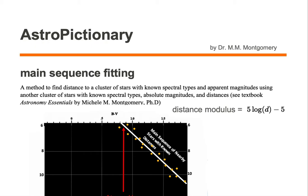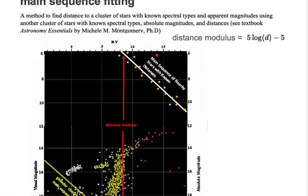Main sequence fitting is a method to find distance to a cluster of stars with known spectral types and apparent magnitudes using another cluster of stars with known spectral types, absolute magnitudes, and distances. Let's take a look at this main sequence fitting.